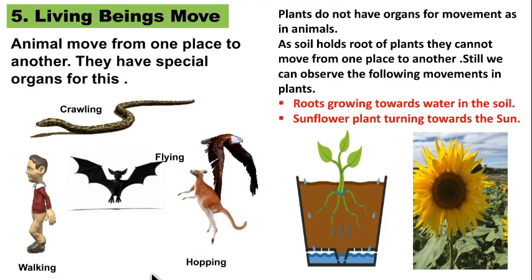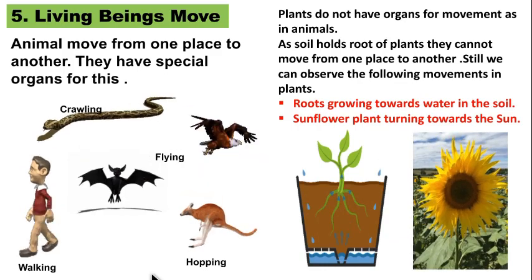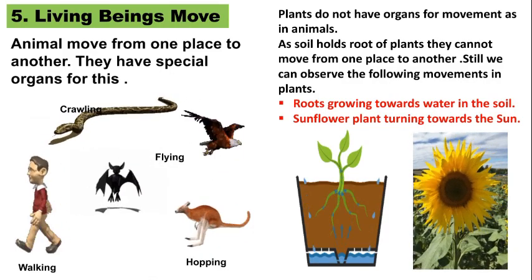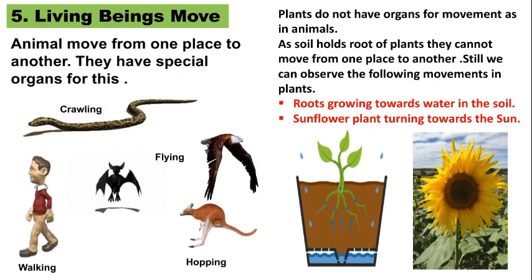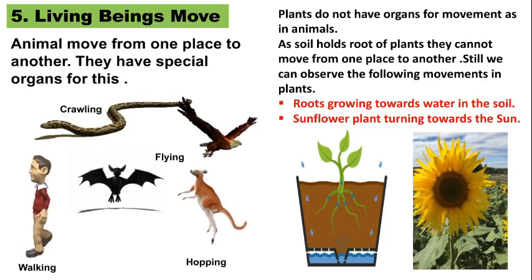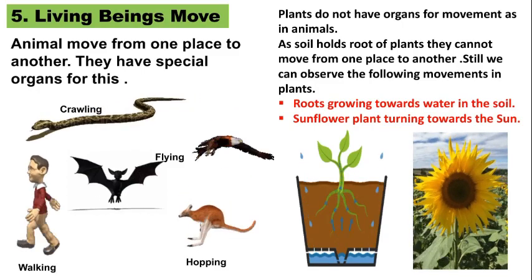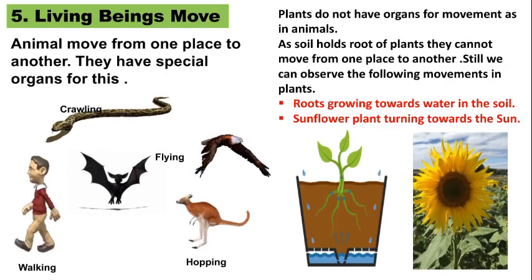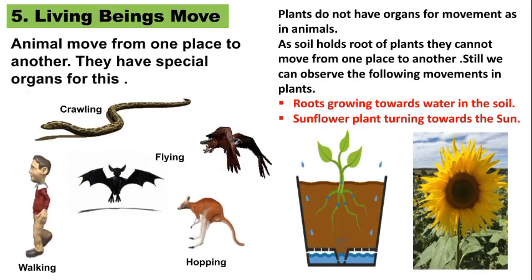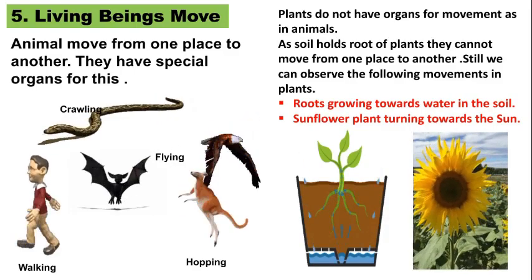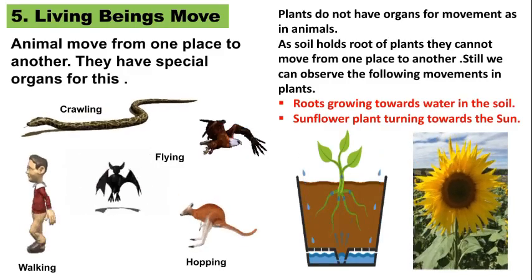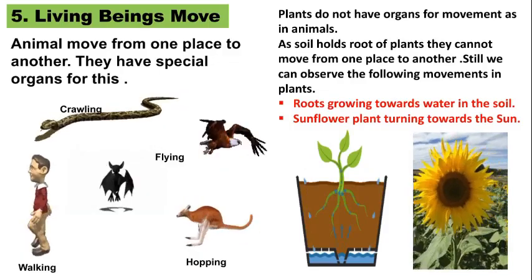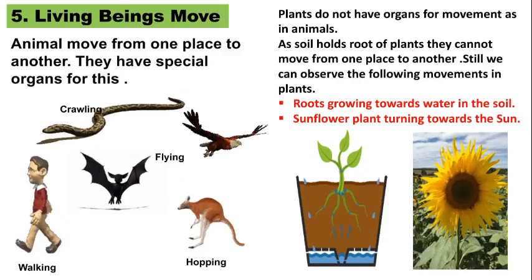Let us start our 5th point: living beings move. Animals move from one place to another and they need special organs for that. For example, a snake crawls because it doesn't have legs - it crawls with the help of muscles and scales. Human beings walk on their legs. Birds and bats fly with the help of wings. Kangaroos and frogs hop with the help of their legs. Living beings move with the help of special organs.